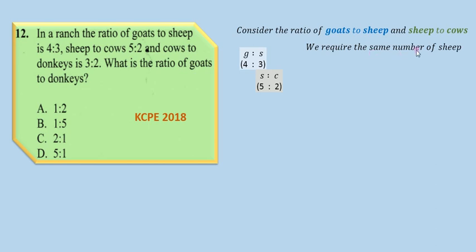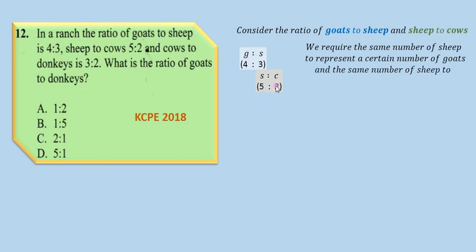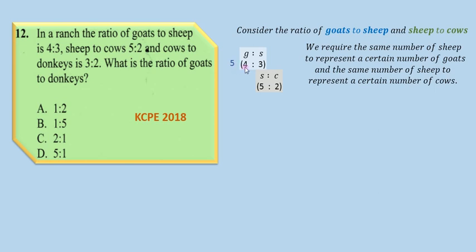We need to make sure that we have the same number of sheep representing a certain number of goats, and the same number of sheep representing a certain number of cows. To do this, we are going to increase the first ratio by multiplying by 5: 5 multiplied by 4 gives 20, and 5 multiplied by 3 gives 15.